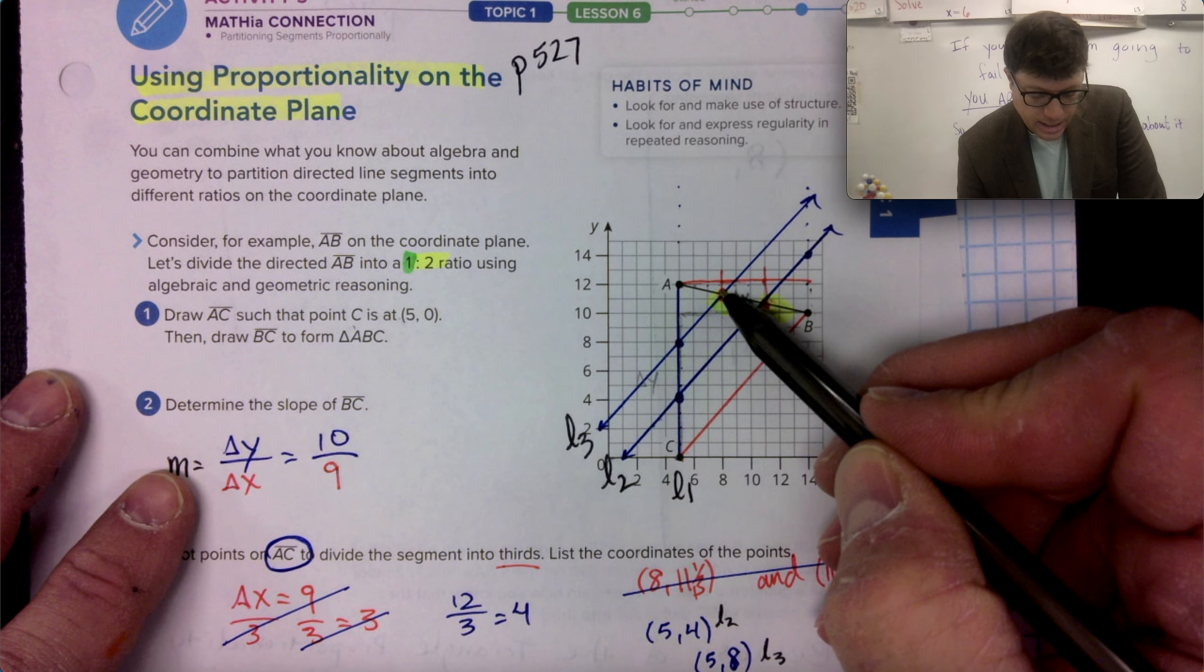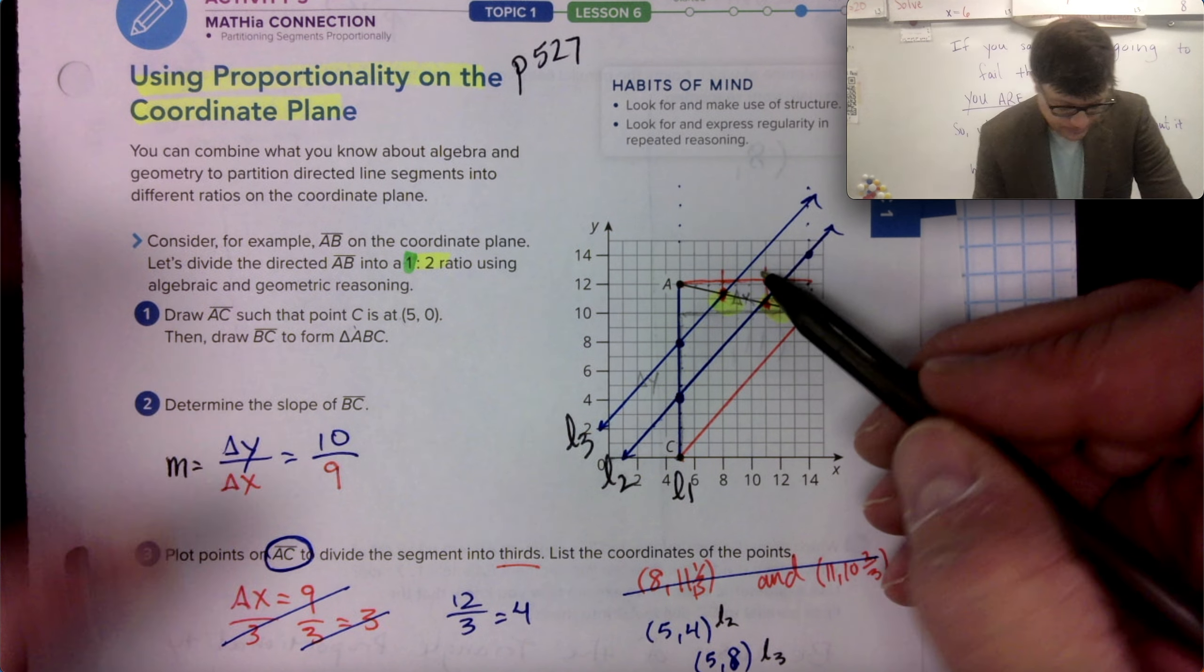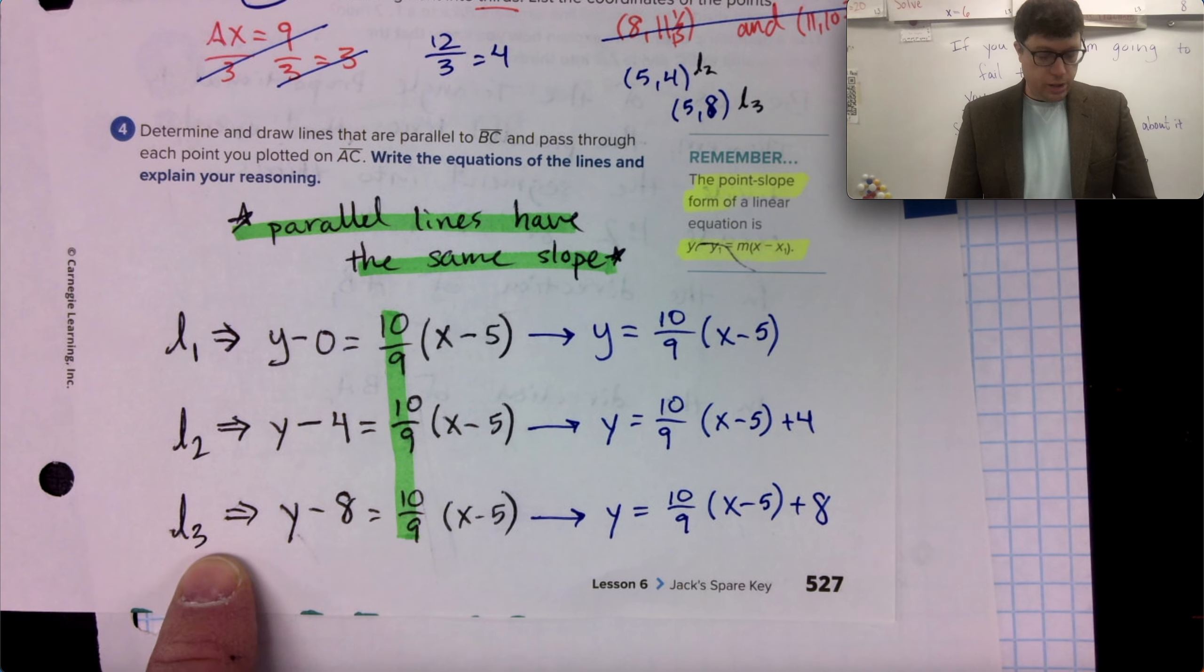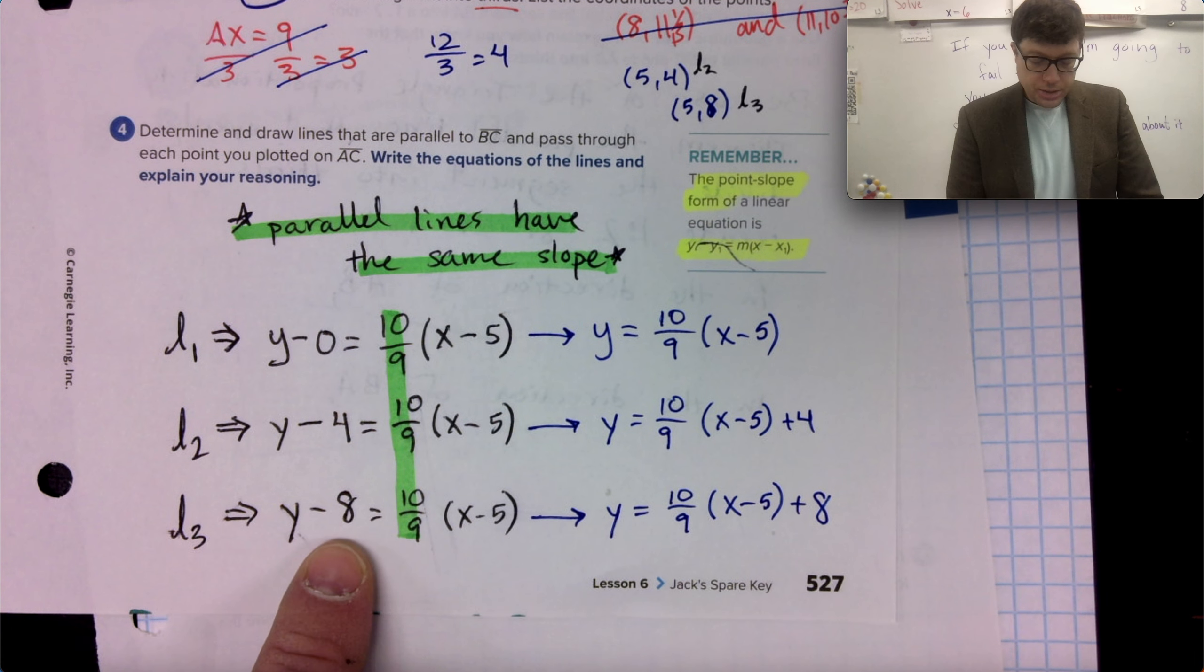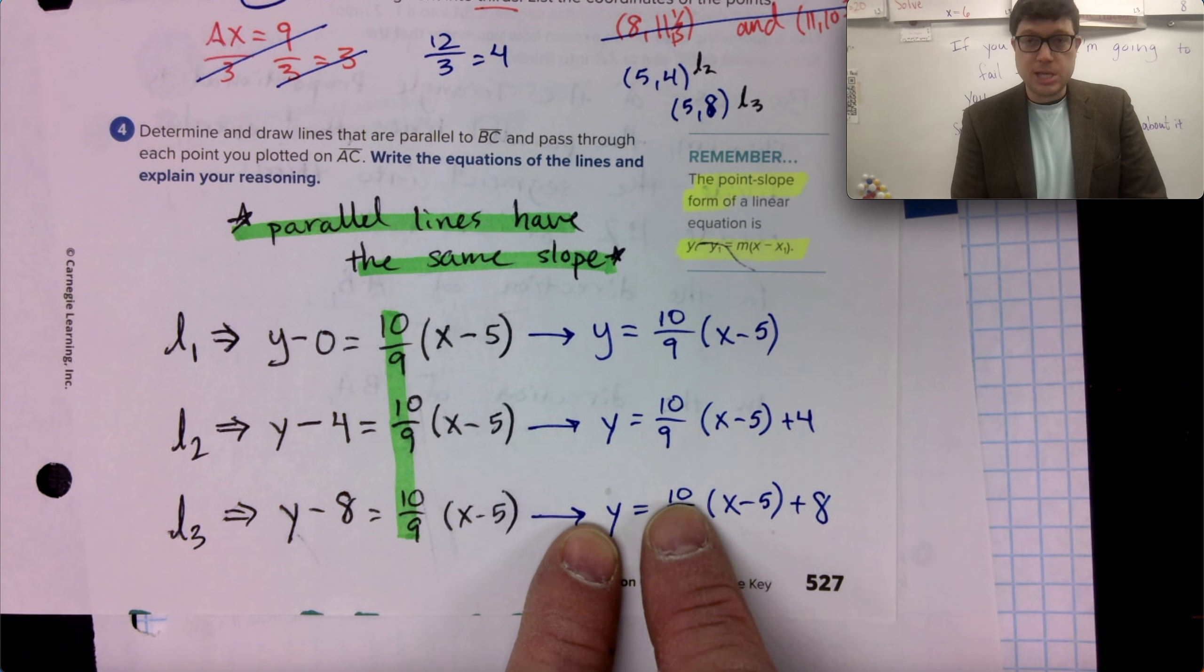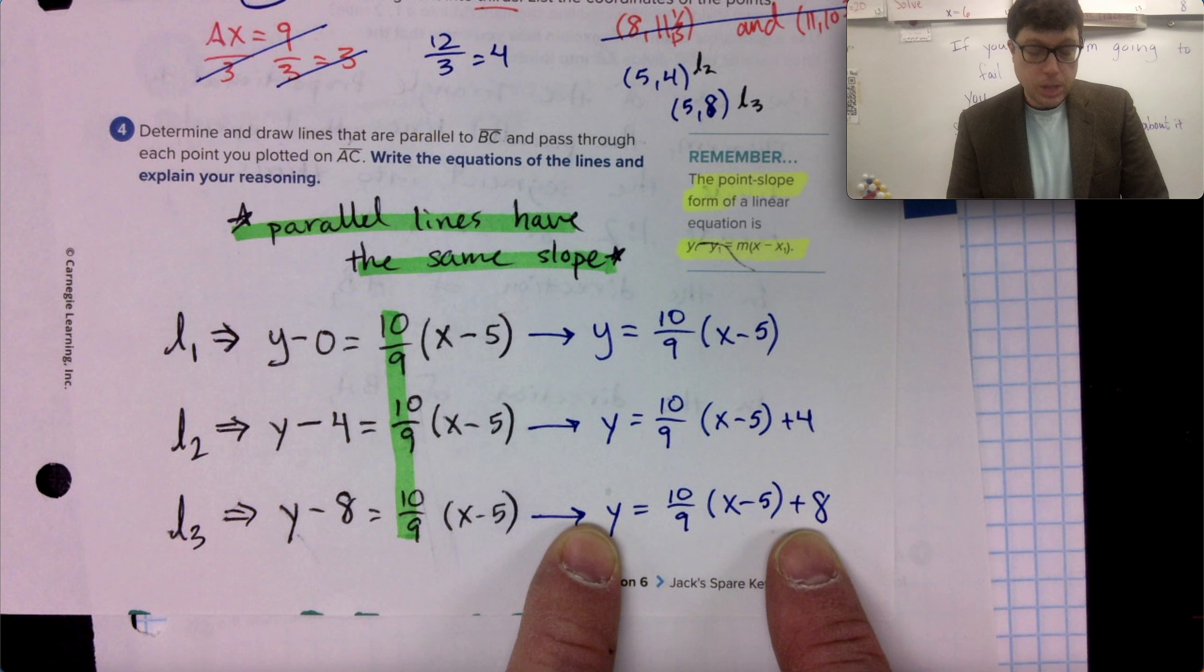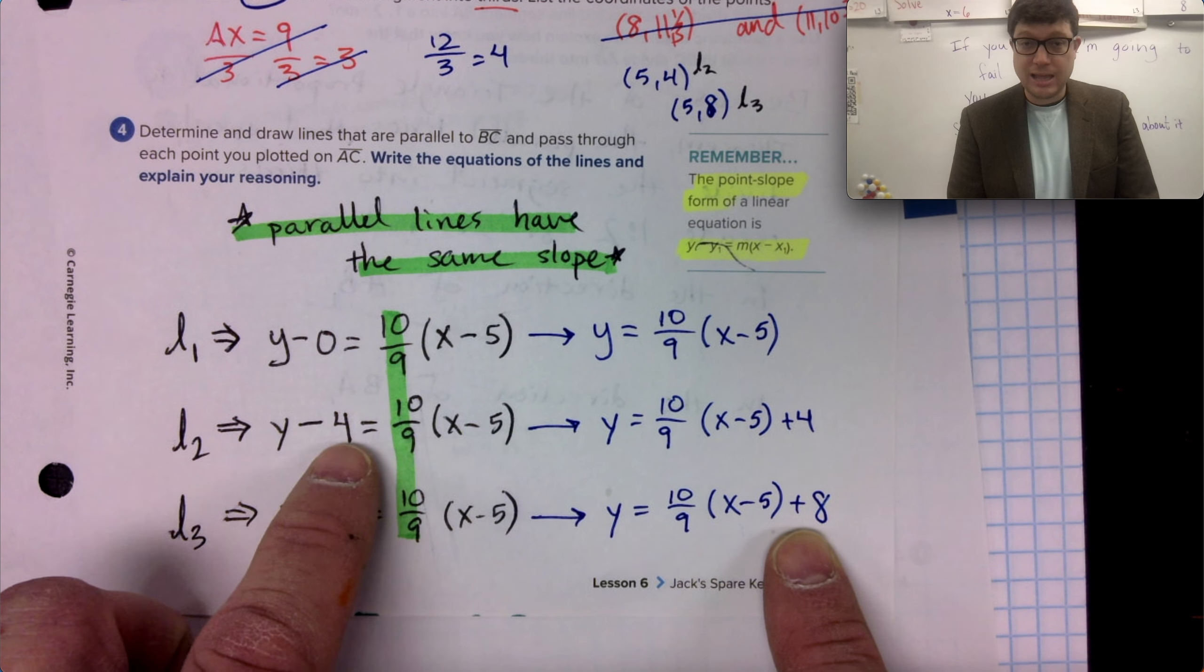Eight, flipping back, eight is on the Y coordinate or on the line of L3. And I took the information from the last video. I added eight to both sides of the equal sign so that I could get Y by itself, which means it's really 10 over nine times X minus five plus eight. I did the same thing with minus four.